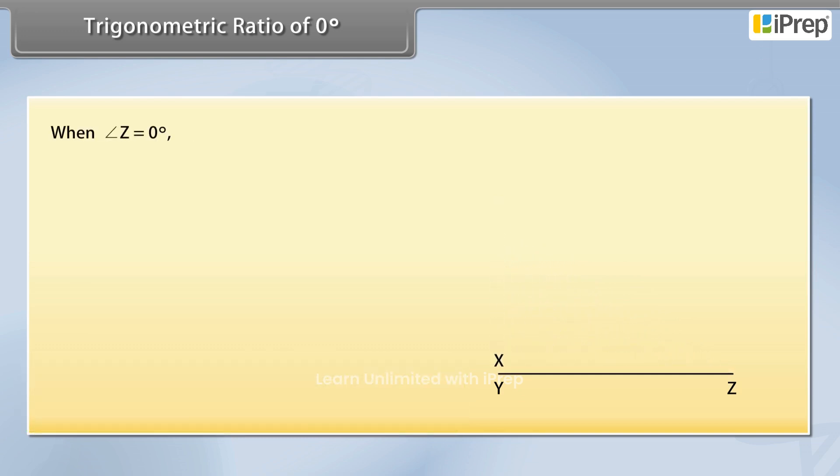When the measure of angle Z is reduced to zero degree, XZ merges with YZ and the length of XY is zero.